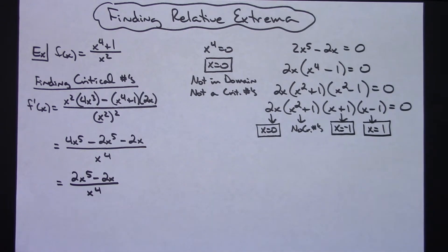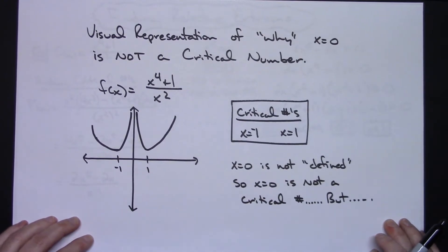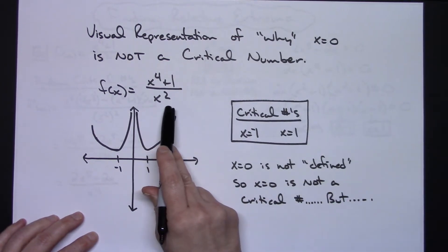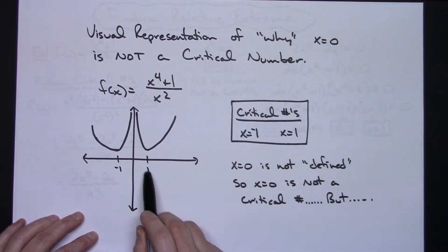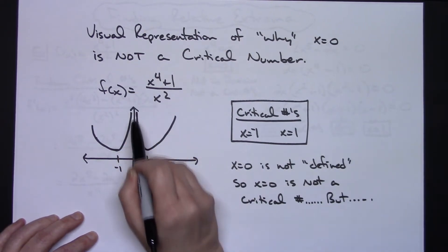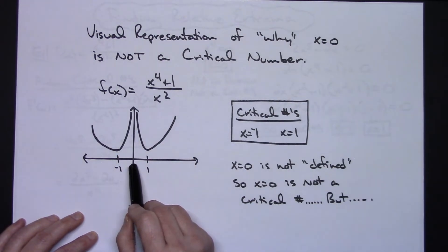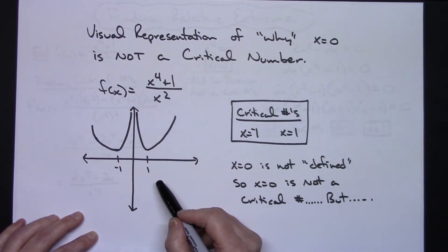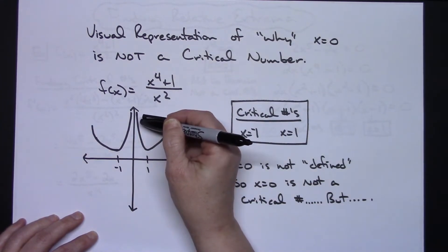Zero popped up in two different places but it is not a critical number because it's not in the domain. To visualize why, I've done a rough sketch of what the graph looks like. For f(x) = (x to the fourth plus 1) over x squared, we can see critical numbers at negative 1 and 1 with horizontal tangents right there. But x equals zero is not defined — there's a vertical asymptote there with unbounded behavior going on.